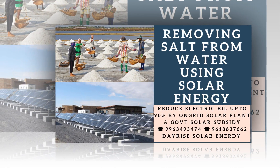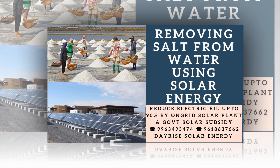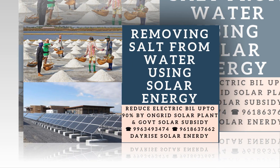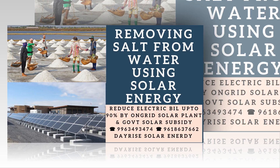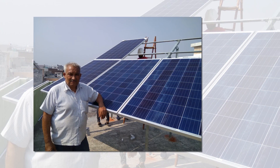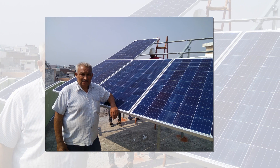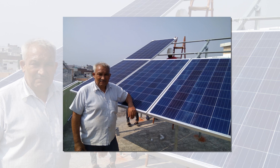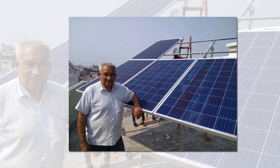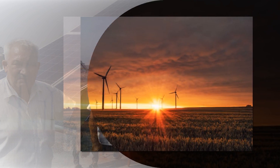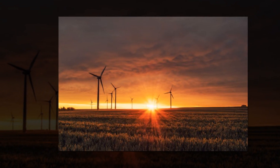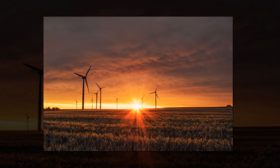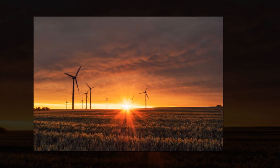These Grid Connected Rooftop Solar Power Plant systems produce electricity during the daytime, which is consumed fully by powering captive loads and feeds excess power to the grid as long as the grid is available. In cases where solar power is not sufficient due to cloud cover, the captive loads are powered by drawing power from the main grid.